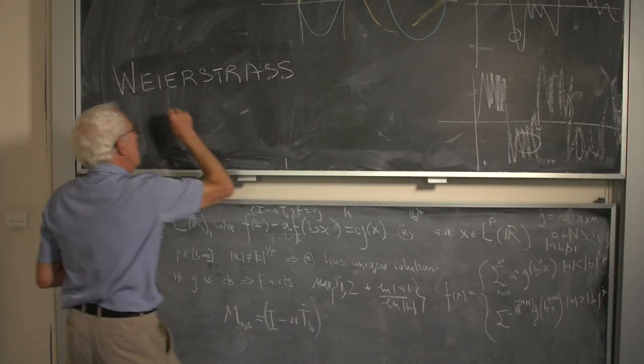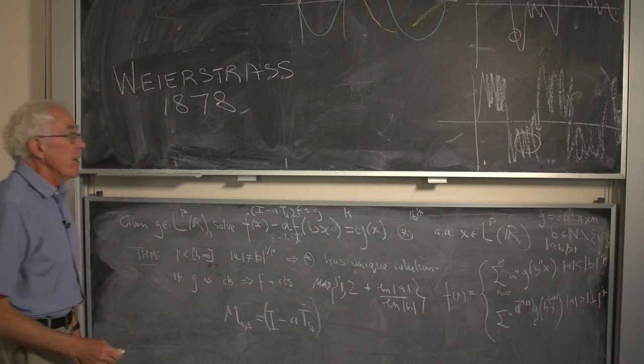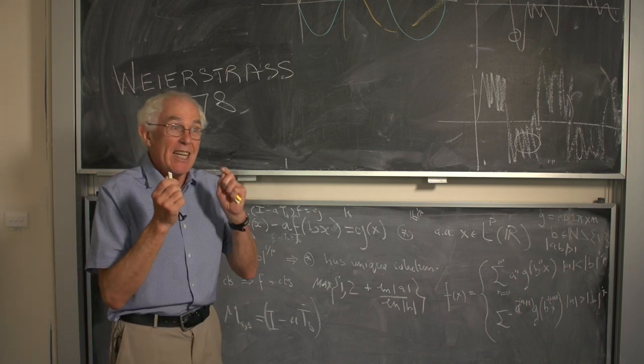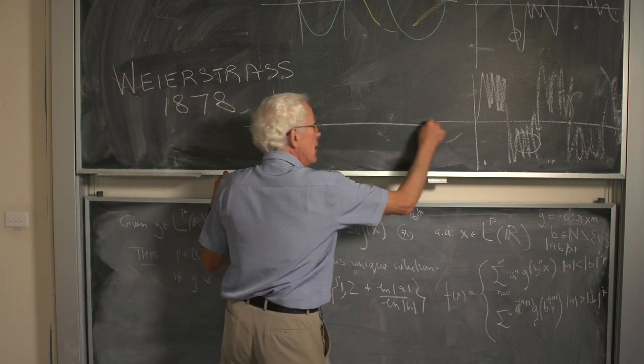Weierstrass. 1878. Berlin. He came up with a function that was a nightmare to everyone. It's called the Weierstrass nowhere differentiable function and guess what it looks like.